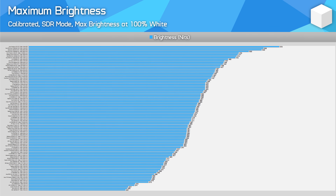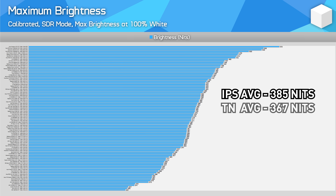Because the liquid crystal layer is separate from the backlight, there's no technical reason why TN, IPS or VA monitors should differ in brightness. Across the 100 displays we've tested, the average SDR brightness for IPS panels was 385 nits versus 367 nits for TN and 346 nits for VA — so really there's not much of a difference.